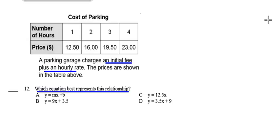Question 12, same table, same information, but a different question: which equation best represents this relationship? Is it y = mx + b? y = 9x + 3.5? y = 12.5x? Or y = 3.5x + 9?